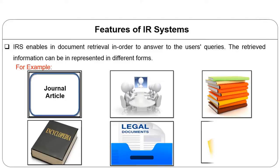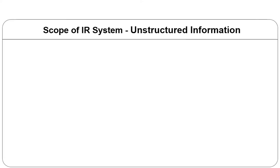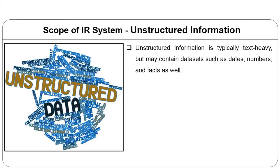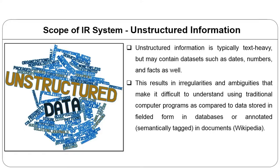For example, the database can contain bibliographic resources or full text documents such as journal articles, newspaper articles, textbooks, encyclopedias, legal documents, statistical records, along with audio, graphics, images, or video information. The IRS system can have two main types of information: structured and unstructured. Unstructured information either does not have a predefined data model or is not organized in a predefined order. It is typically text-heavy but may also contain data such as dates, numbers, and facts. Because of its unstructured nature, it results in irregularities and ambiguities that make it difficult to understand using traditional computer programming.